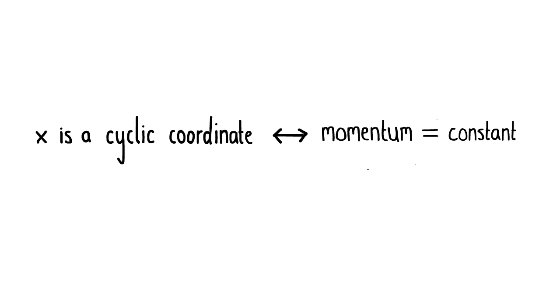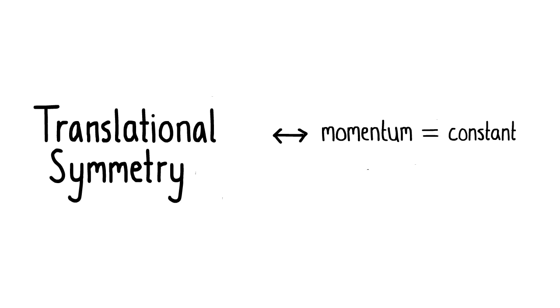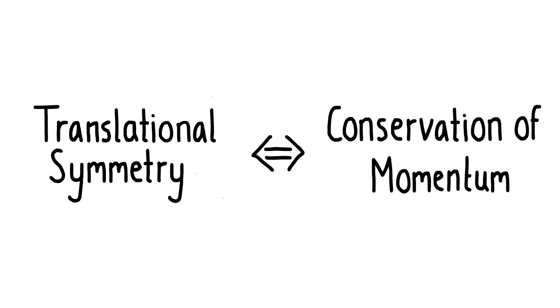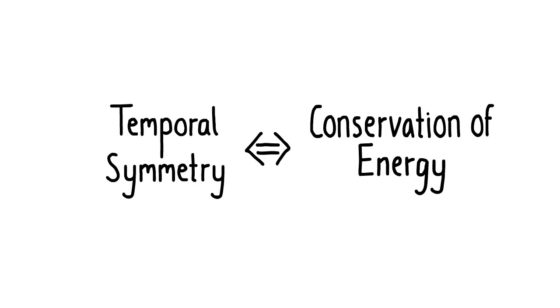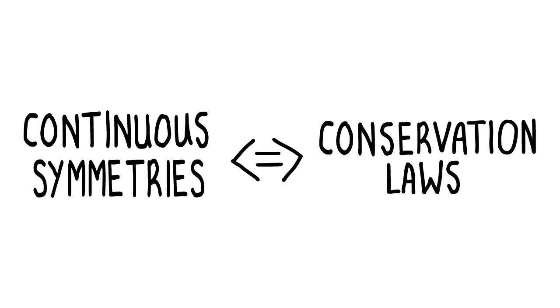And since x being cyclic is equivalent to our system having translational symmetry, we see that conservation of momentum arises from translational symmetry. Similarly, we can use Lagrangian mechanics to show that rotational symmetry is equivalent to the conservation of angular momentum, and temporal or time symmetry is equivalent to the conservation of energy. So Noether's theorem shows us how these rigid conservation laws are equivalent to continuous symmetries that we see in the world around us.